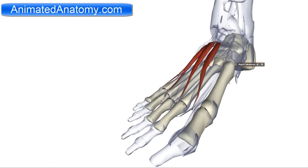It is innervated by the deep peroneal nerve, and its antagonists are the flexor digitorum longus and the flexor digitorum brevis.